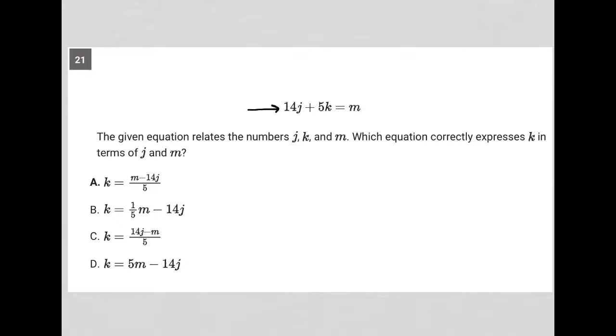This question starts off by providing us with this equation: 14j plus 5k equals m. We obviously have three variables that we don't know here.